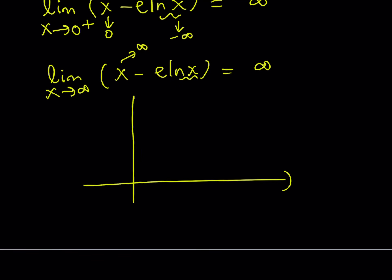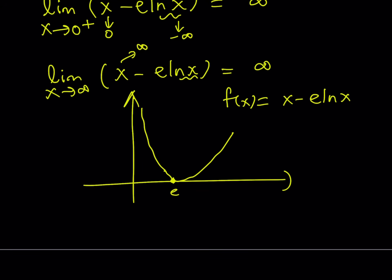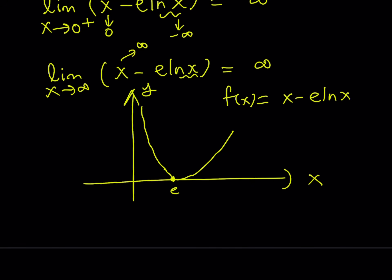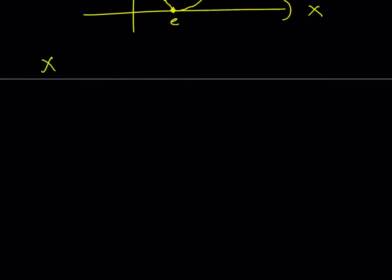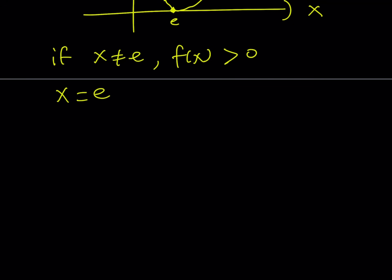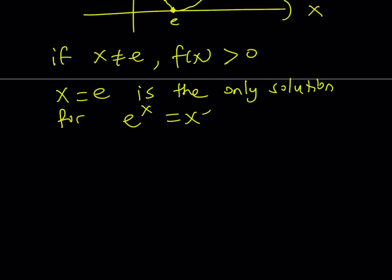So we have a function that reaches a minimum at x equals e and otherwise approaches infinity on either end. Our graph of x minus e ln x is going to look like a U-shape where the minimum touches zero at x equals e — essentially a touch-and-go at the x-axis. This shows us that we have only one solution to this equation. If x does not equal e, then f of x is always going to be positive, which means it can never be zero. So x equals e is the only solution for the equation e to the power x equals x to the power e.